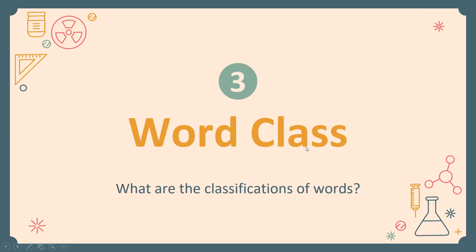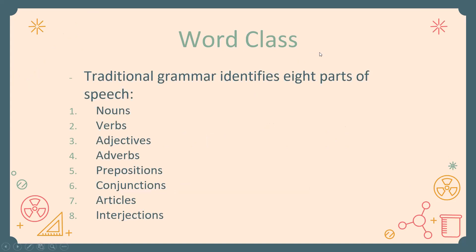Word class — what are the classifications of words? In language, we know words can be classified. Traditional grammar identifies eight parts of speech: nouns, verbs, adjectives, adverbs, prepositions, conjunctions, articles (determiners such as 'a', 'an', 'the'), and interjections. These eight parts of speech are divided into thirteen syntactic categories, which we will cover later when we study syntax.